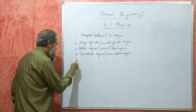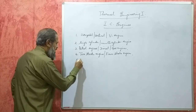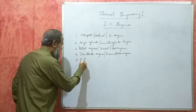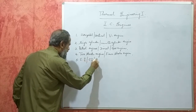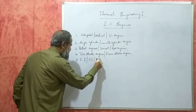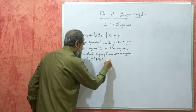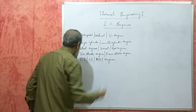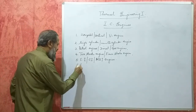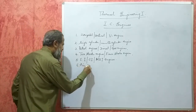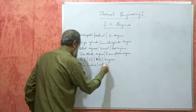On the basis of ignition system used, they are classified into spark ignition (SI) engines, compression ignition engines, and hot bulb ignition engines. Then, on the basis of cooling system employed, they are classified into air cooled engines, water cooled engines, oil cooled engines, etc.